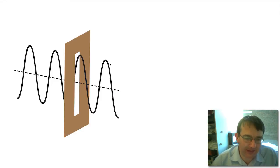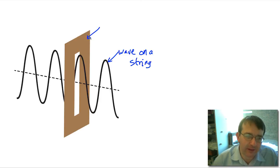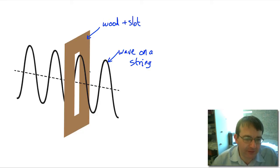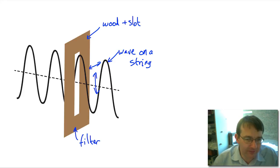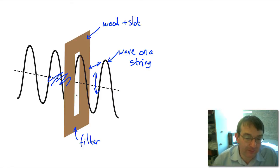What would that look like for a mechanical wave? Here we have a wave on a string vibrating, and a piece of wood with a slot cut out of it. If the string is threaded through this slot, the slot acts as a polarization filter. The string can only vibrate up and down; the slot prevents vibrations in the x-direction. So this is essentially a polarization filter — if the string was oscillating in the horizontal direction, it would be stopped by the filter, which only allows the string to move up and down.